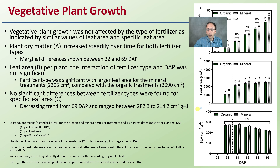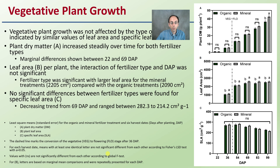A decreasing trend from day 69 onward was observed, ranging between 282.3 and 214.2 centimeters squared per gram. The transition from veg to flowering occurs between day 36 and day 54, and we can see differences in trends during the vegetative part.